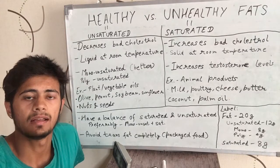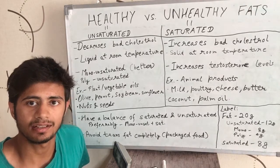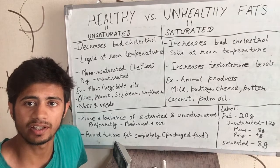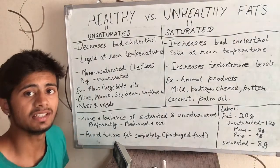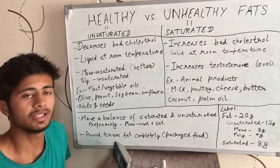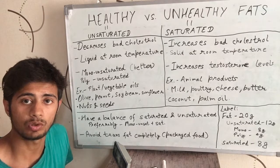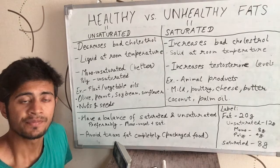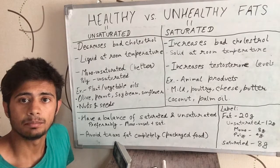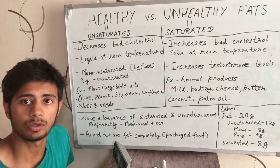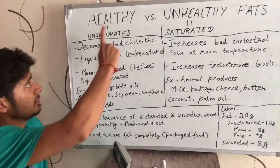Today I'm going to talk about the difference between healthy and unhealthy fats. We have talked about what fats are and how they are useful for our body in a previous video. Recalling what fats are: they are one of the three macronutrients — protein, carbohydrates, and fats — that we get from food. They keep our hormonal levels intact, keep us feeling full, and help in digestion of fat-soluble vitamins. Those are the advantages of eating fats.